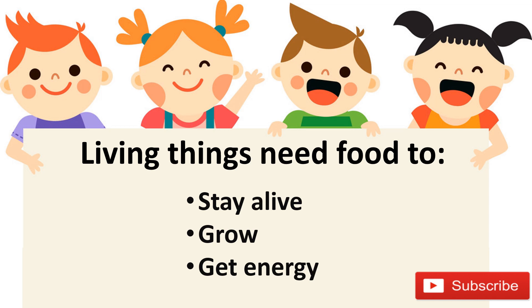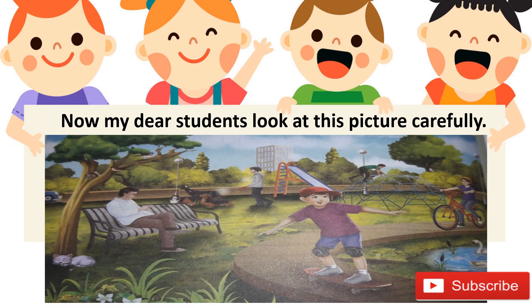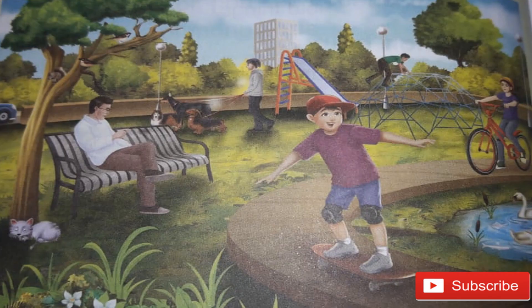Ab hum baat karte hain ke aaj hum log kya parhne waale hain. So students, today we are going to look at a picture very carefully and list down the living things we can see in it — living things jo abhi humne thodi der pehle parhe hain, which are of three types. Ab hum isko gaur se dekhenge ke iske andar wo teen tarhan ke living things hain ya nahi.